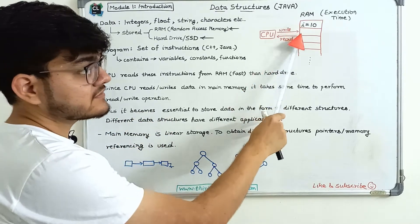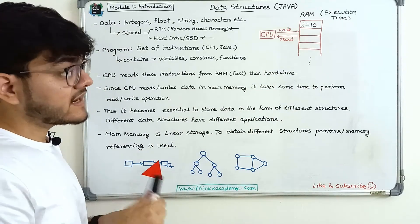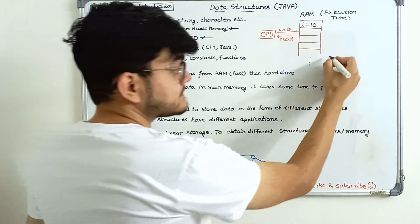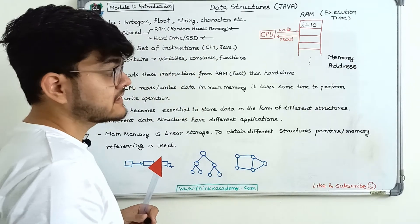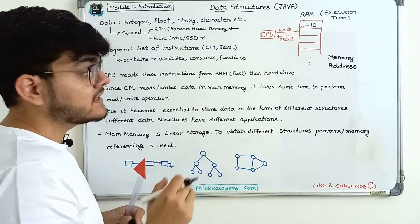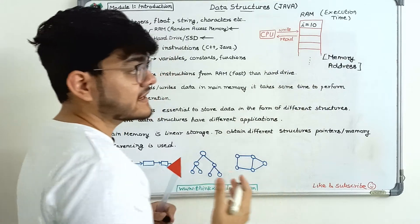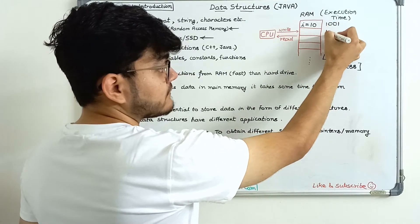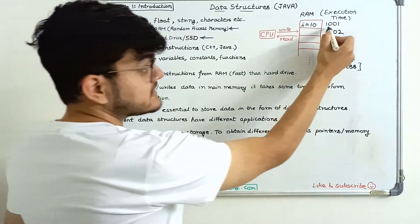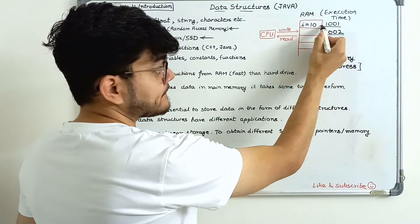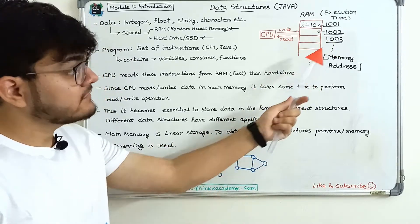Since RAM is linear in structure, it means we can store data only in linear form — first data here, then second, then third and so on. But that is not the case because RAM has a very important feature: memory address. The CPU knows which instruction to execute by accessing a memory address. Every block in RAM has a memory address — for example, 1001, then 1002, 1003, and so on. So all blocks in RAM have a memory address, and the question is how we can use this to create data structures.